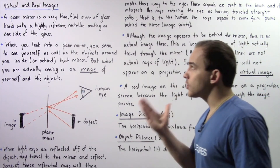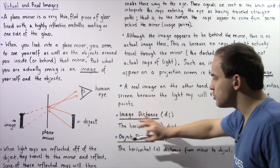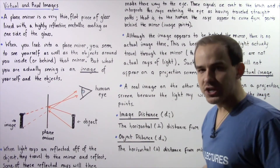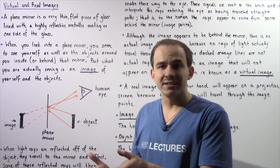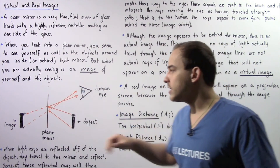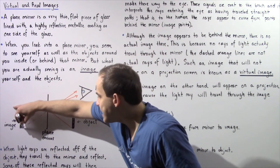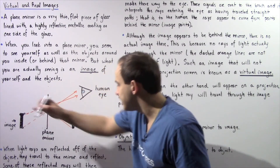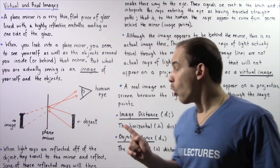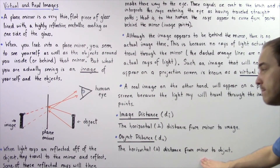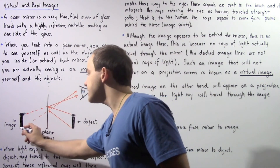Whenever we discuss virtual and real images, it's important to define two terms: image distance and object distance. The image distance, given by D with the subscript i, is the horizontal or perpendicular distance between the mirror and the image. The object distance, given by D with the subscript o, is the horizontal or perpendicular distance from the mirror to the object.